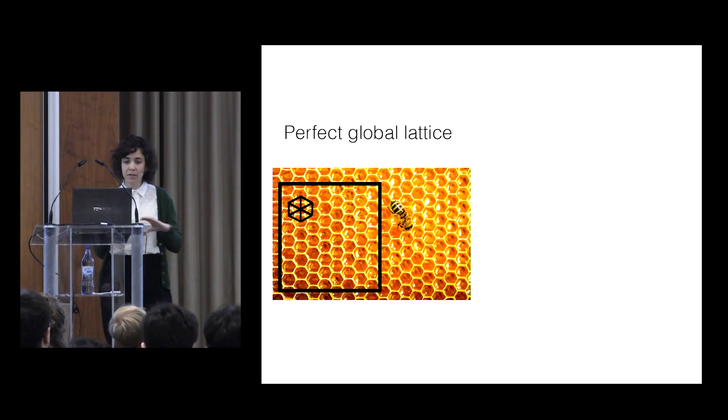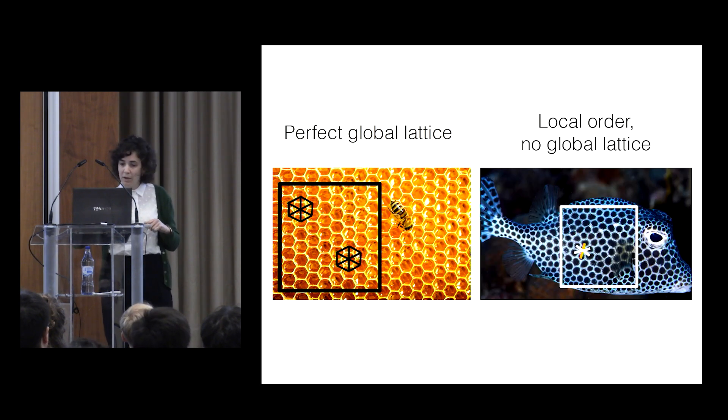And just for intuition, in 2D, here is a global lattice. You see that the unit perfectly repeats itself, and there are also fixed angles. But here we have narrowly distributed distances, but the unit doesn't perfectly repeat itself.